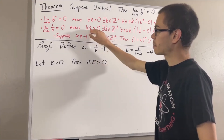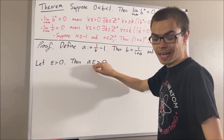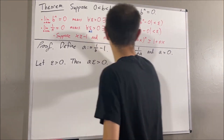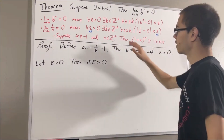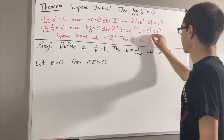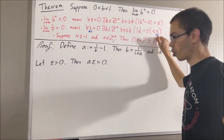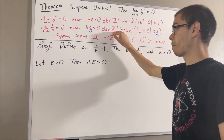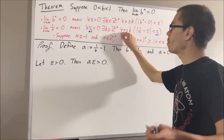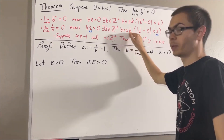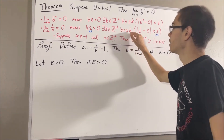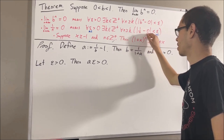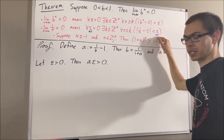So, if we take epsilon to be a times epsilon in our proof, then we have that this is true. So there is some positive integer — I'll call it p — such that for all positive integers n greater than or equal to p, the absolute value of 1 over n minus 0 is less than a times epsilon.